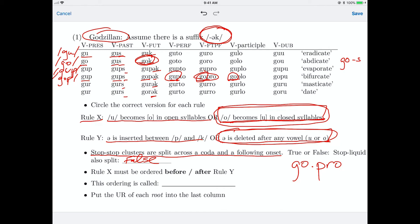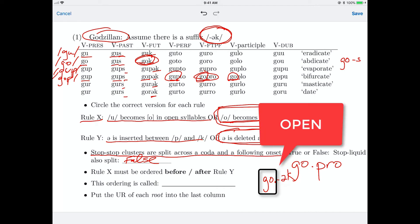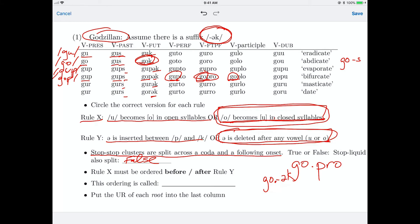So one way to deal with that is to posit that at the time that o's became u's in closed syllables, this wasn't a closed syllable. Well, how could we do that? Well, we could set up the underlying form to be g-o, and then we have the suffix schwa-k. So now the syllable boundary is here. It's go plus ək. That's an open syllable, because there's no coda. So this rule wouldn't apply. So if we first apply the rule x at this stage in the derivation first, it's not going to have any effect here. And then we apply our rule y, which deletes the schwa after any vowel. This is going to come out as gok.